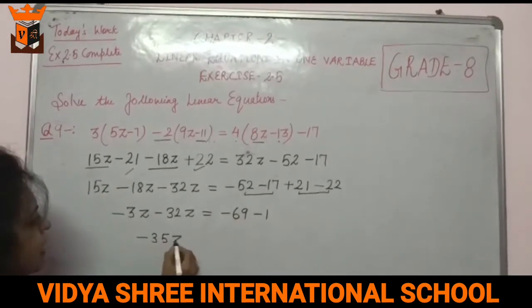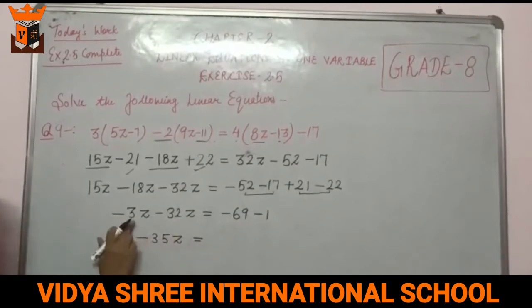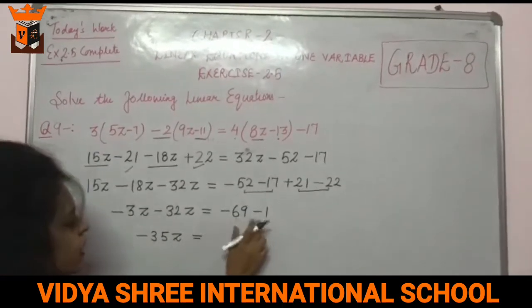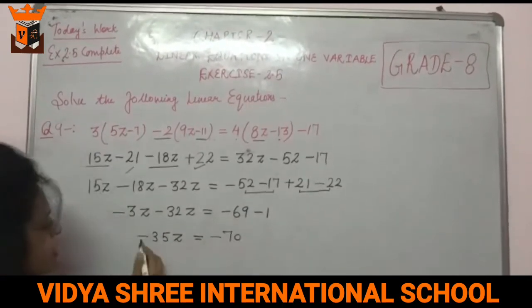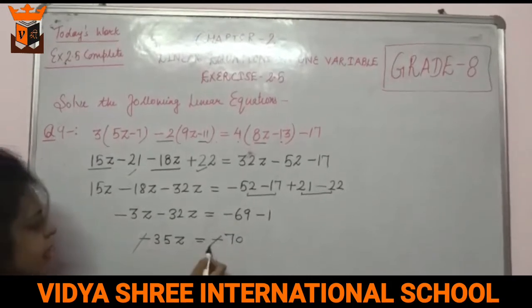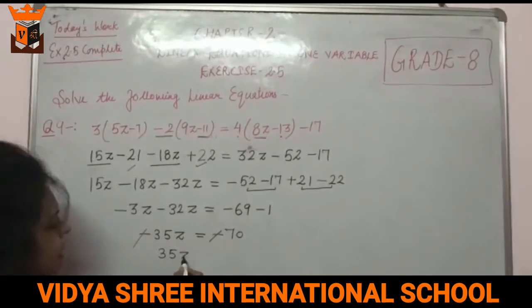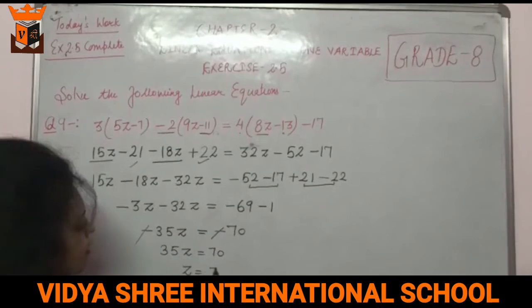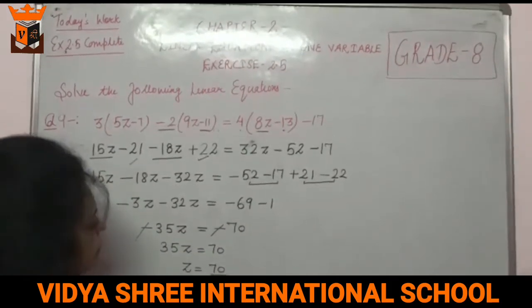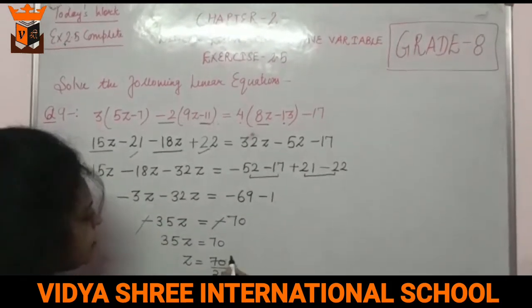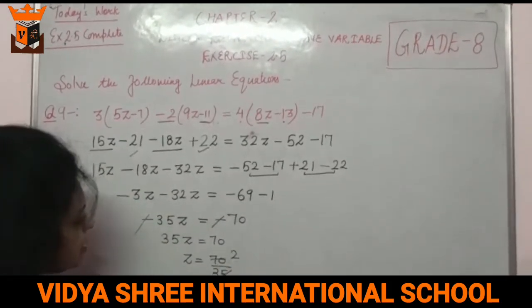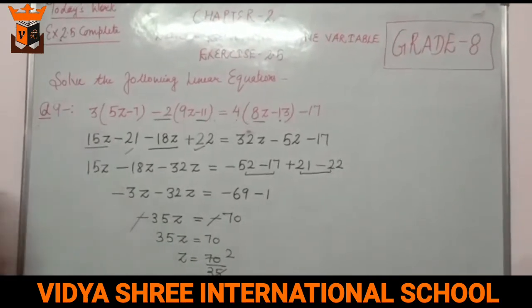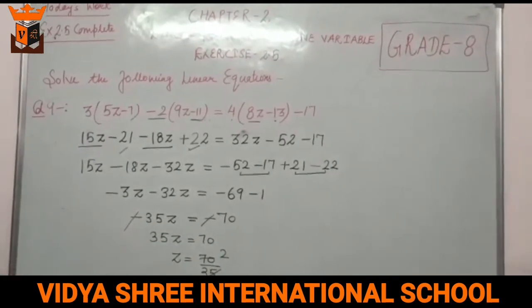The two negative terms add together: 35Z equals 70. Minus cancels minus. So 35Z equals 70, and dividing 70 by 35 gives Z equals 2.